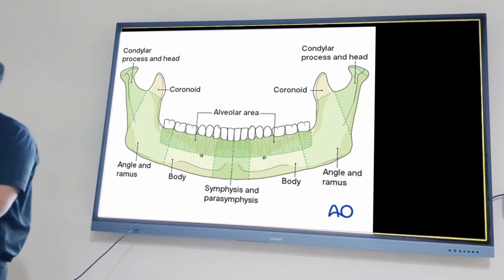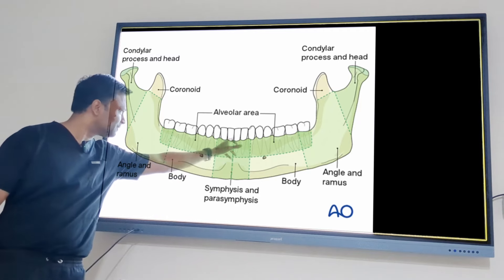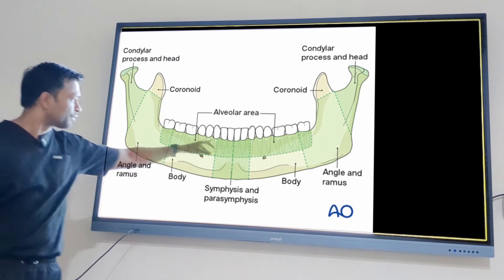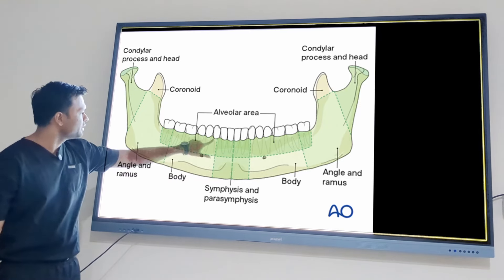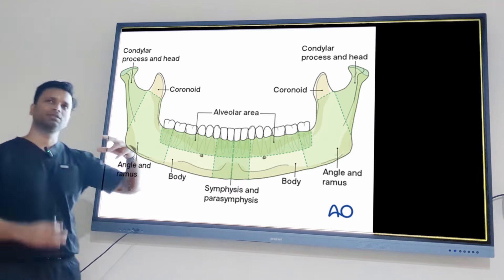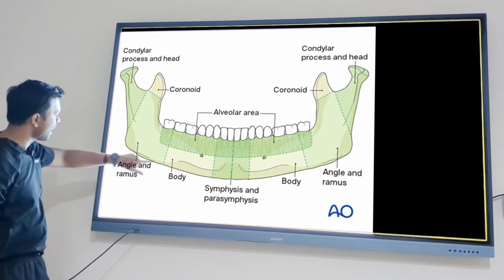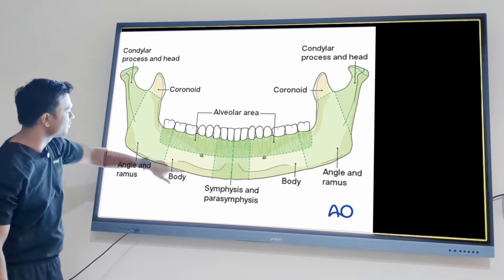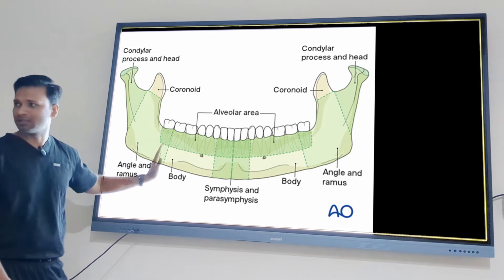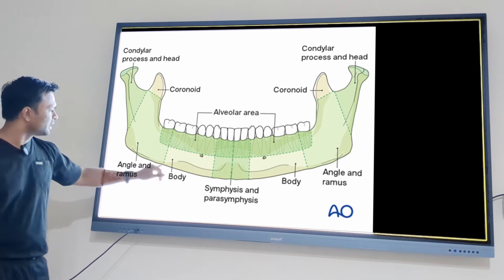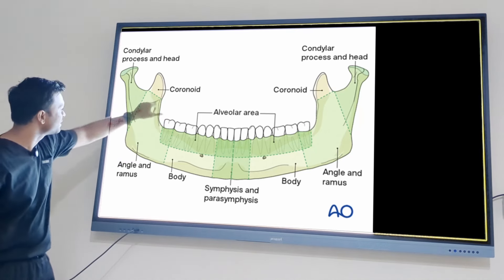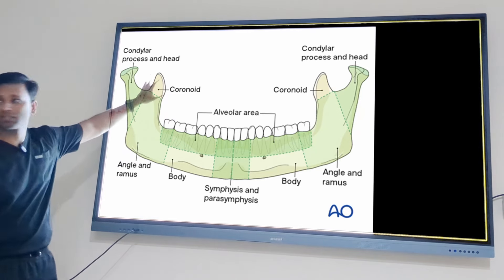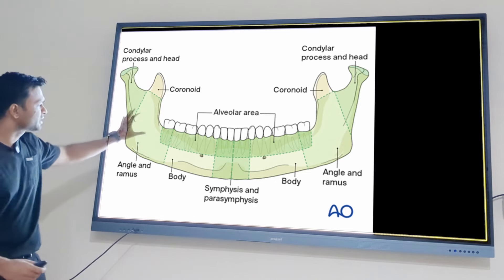The central part between the central incisors is the symphysis — exactly at the center. From the symphysis to the middle of the canine is called the parasymphysis. From the canine to the anterior border of the masseter muscle is the body. The area covered by the masseter muscle is the angle region, then the ramus, the condyle, and the coronoid process — these are the bony landmarks.